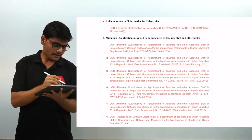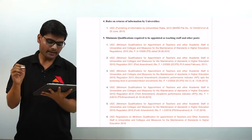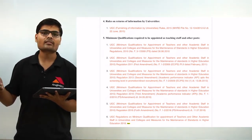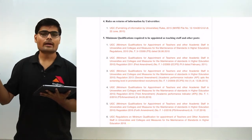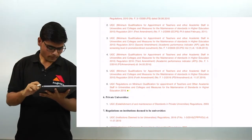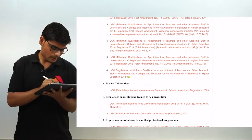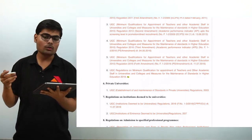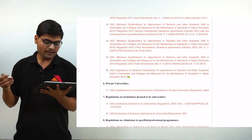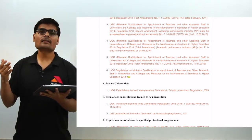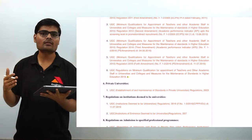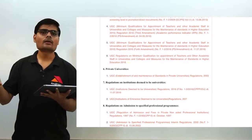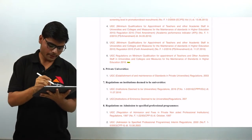In point number five, you can see that there is a minimum qualification required to be appointed as teacher, staff and other posts. In this, you will find all information regarding the appointment of assistant professor, associate professor and professor post, and also librarian post and other academic staff. Here in point number five, sub-point six, there is UGC regulation on minimum qualification for appointment of teacher and other academic staff in universities and colleges and for the maintenance of standards in higher education 2018. If you click on the sixth point, you will get a PDF.